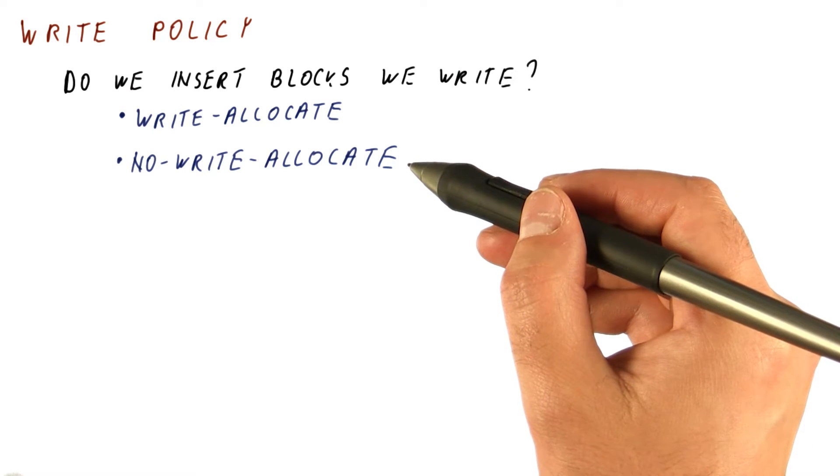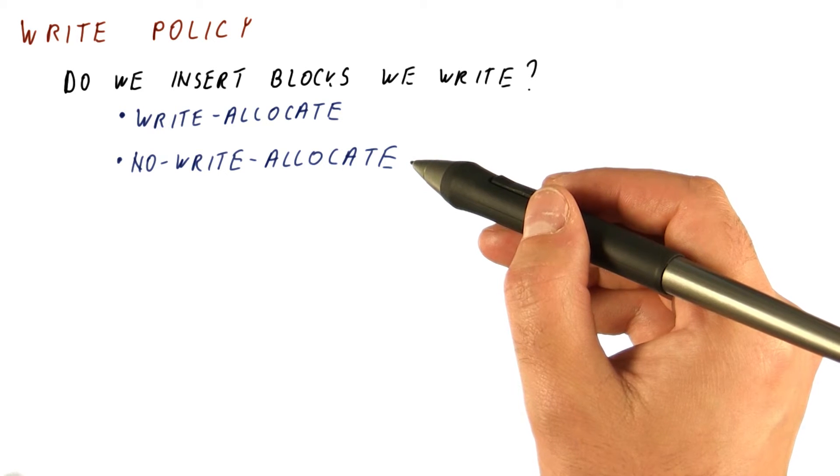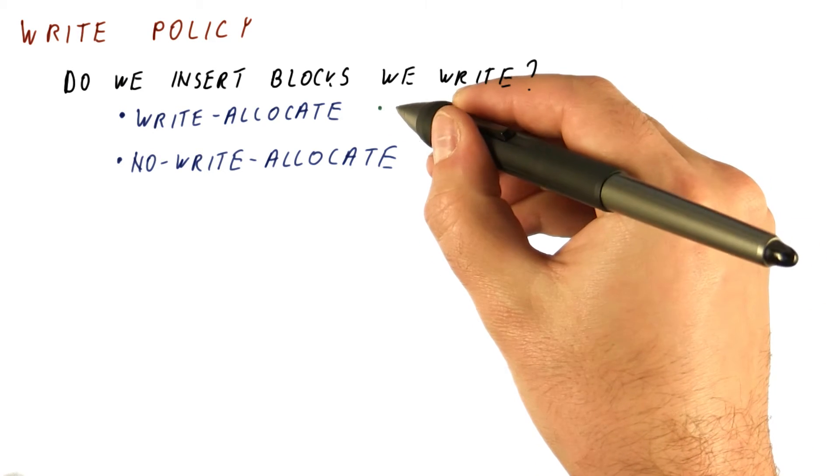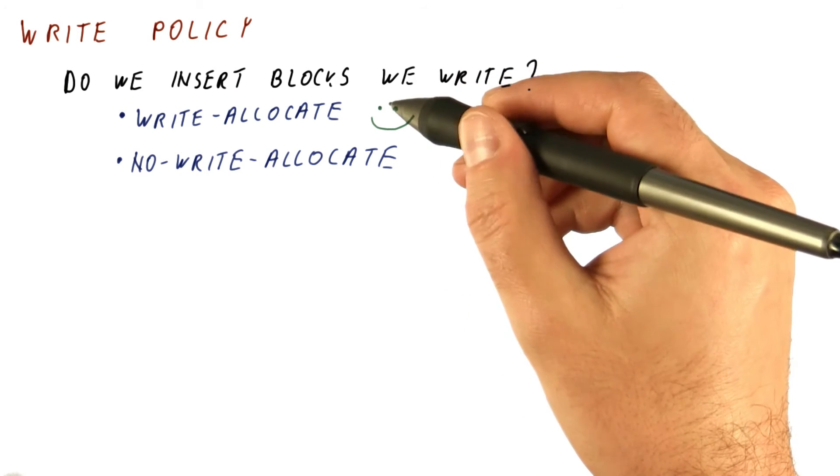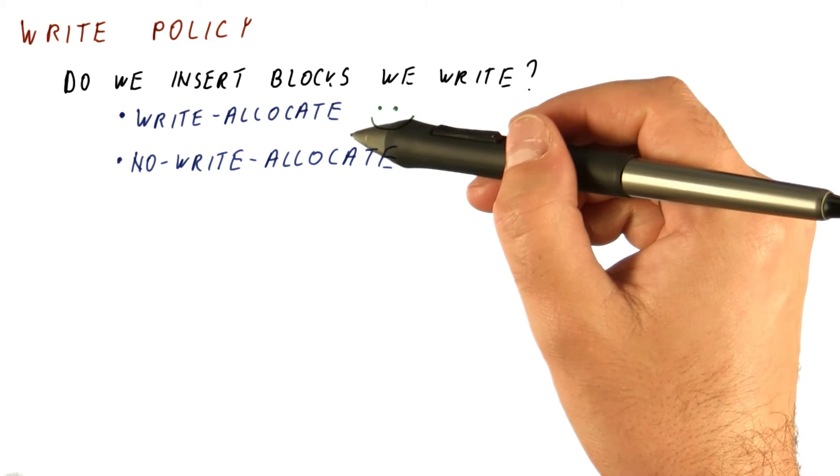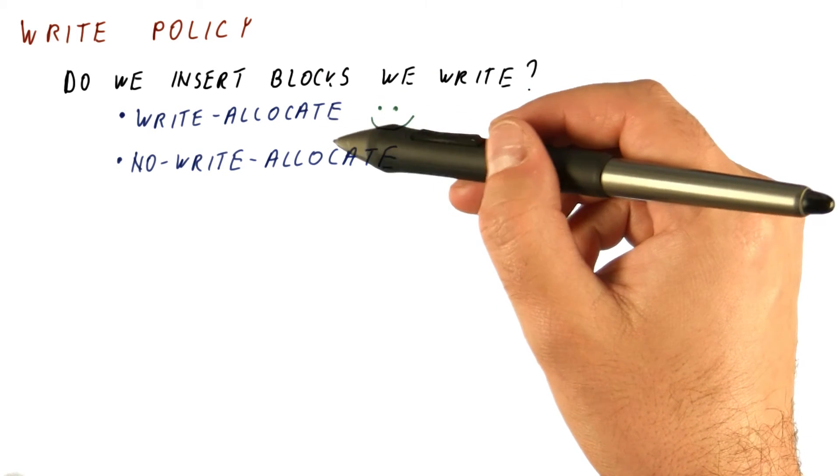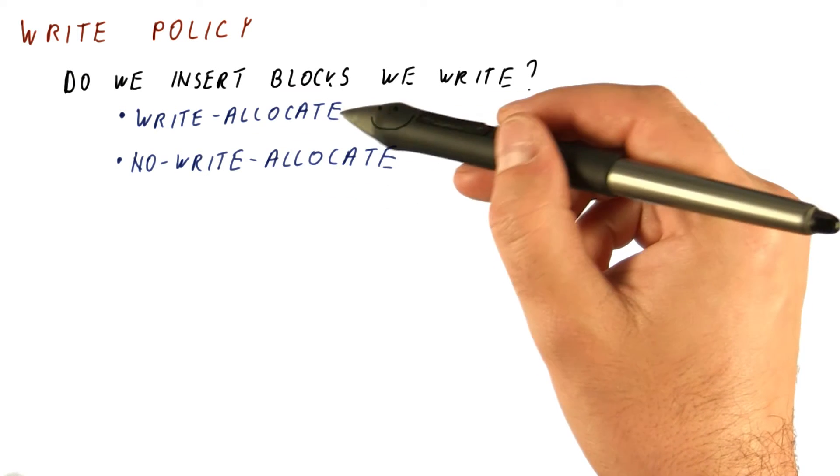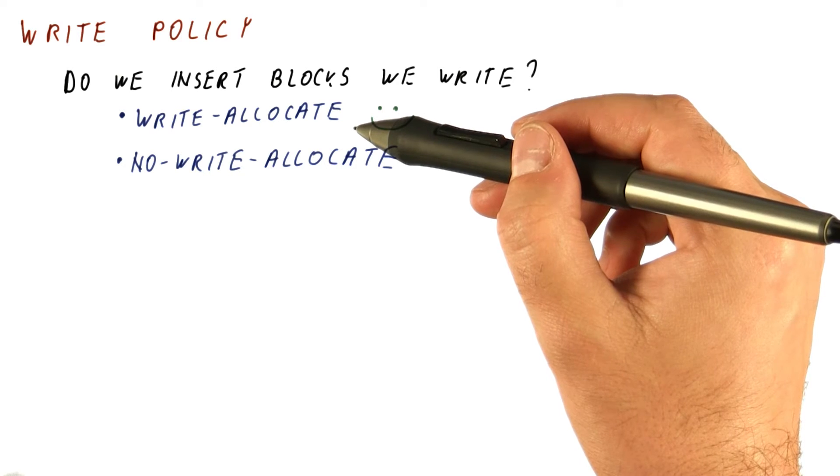So when we have a read miss, the block is brought into the cache. But if we have a write miss, the block is not brought into the cache. Most caches today are write-allocate, simply because there is some locality between reads and writes. Meaning, if we write to something, we're also likely to read it. So write-allocate helps us have read hits, even if we had a write miss.